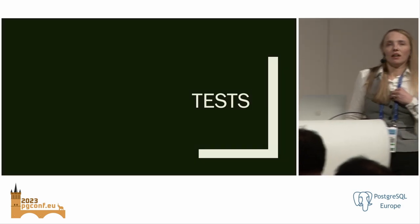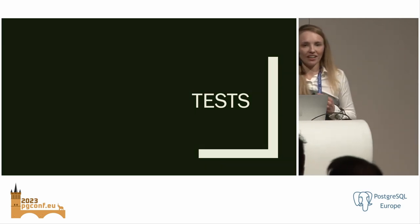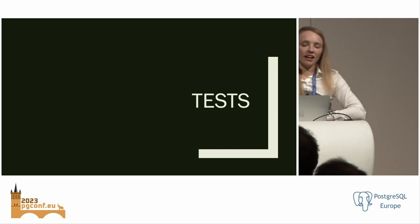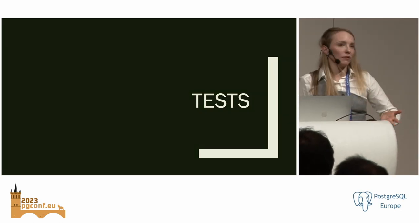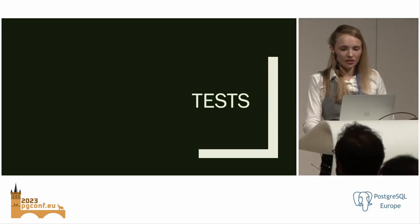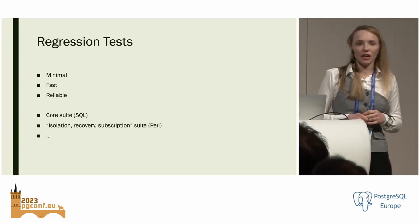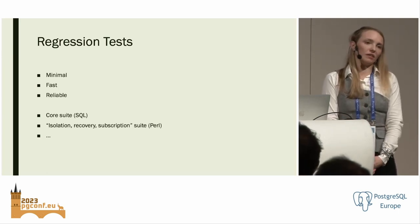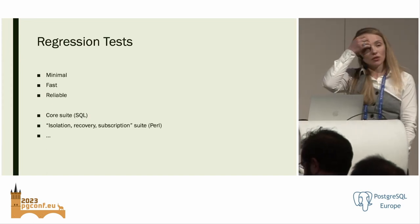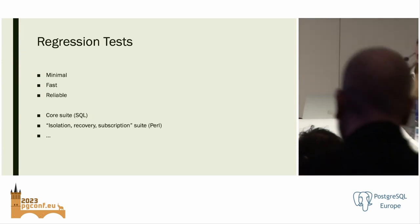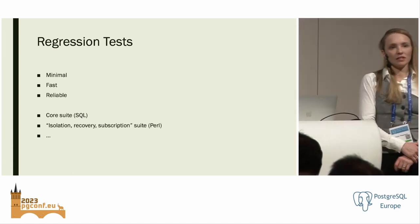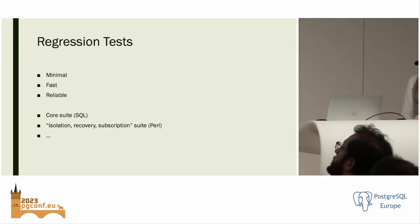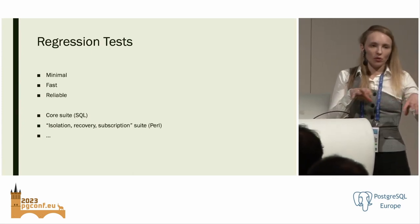Most of the time you should try to write a test — always start with that assumption. There are different kinds: the core regression test suite where things are written in SQL, and if your feature relies on concurrency or replication, there are isolation, recovery, and subscription test suites for logical replication. In those cases you can have multiple Postgres instances and test the interactions between them.